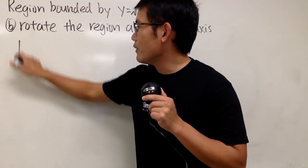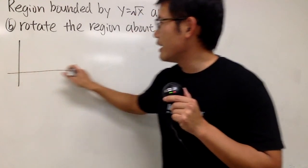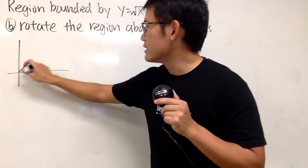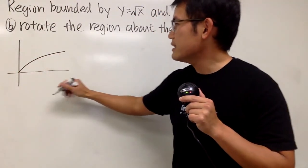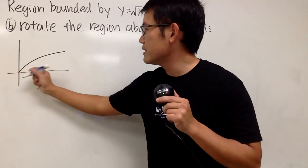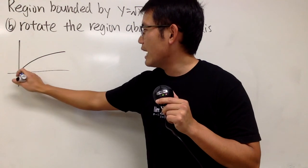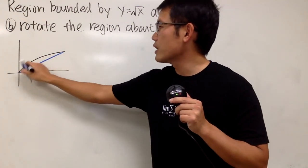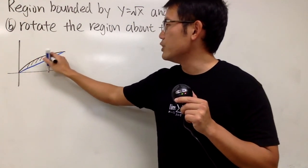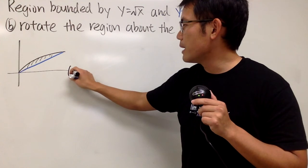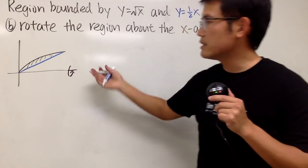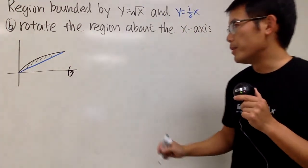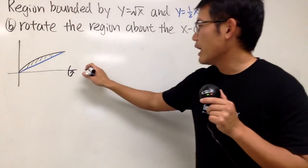First of all, let's go ahead and draw the region again. Here is the square root of x, and here is the one-half x, and of course we are talking about this region, and we are going to rotate about the x-axis, so that's pretty much a typical picture that we'll do.